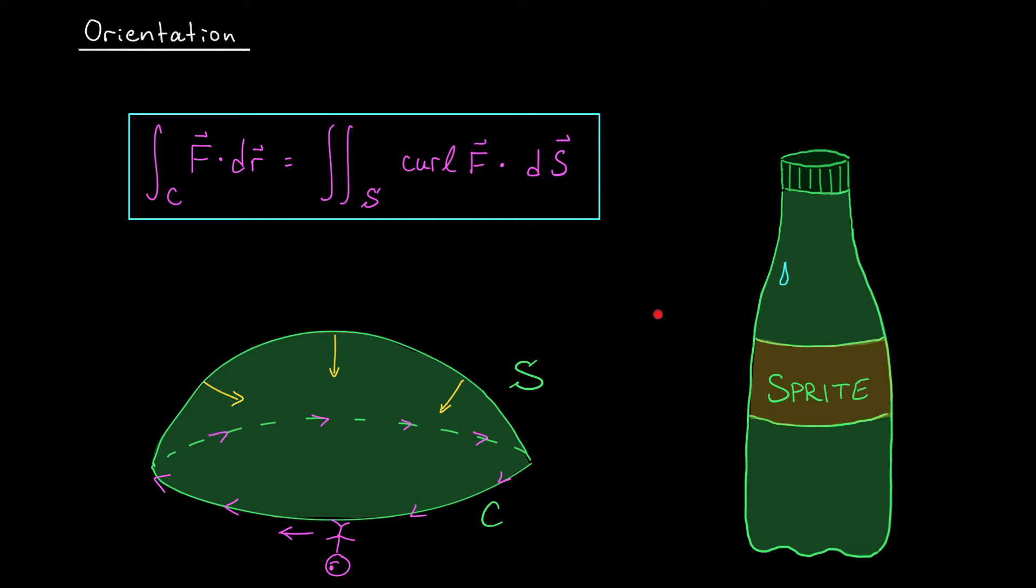You can also think of this in terms of the bottle of Sprite. If you turn the cap clockwise this time, well, now the cap is going to get tighter. It's going to move closer to the bottle. It's going to move downward. So the clockwise or negative orientation on our boundary curve is giving us a downward or inward orientation on our surface.